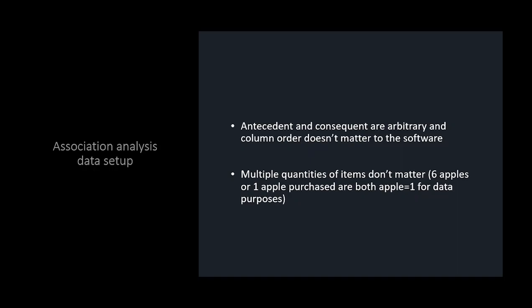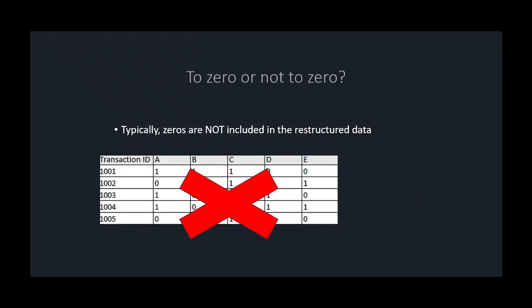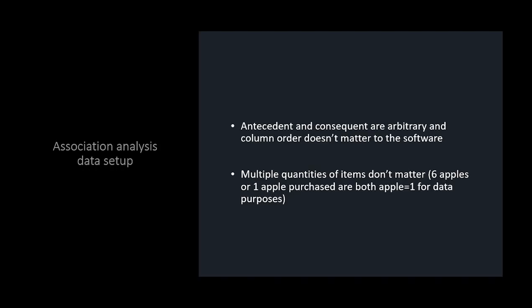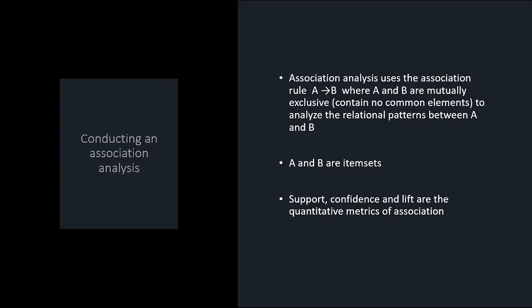When you do association analysis, the antecedent and consequent are arbitrary — whether somebody bought an apple then a banana, or a banana then an apple, it doesn't matter. Multiple quantities don't matter either — six apples is the same as one apple because you're looking at associations, not quantities. Support, confidence, and lift are the measures we use, as discussed in the first part of this lecture.